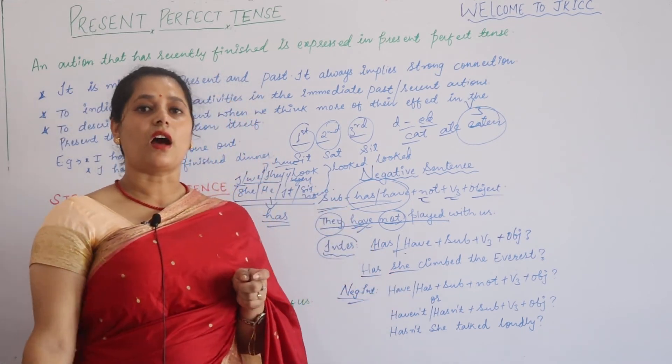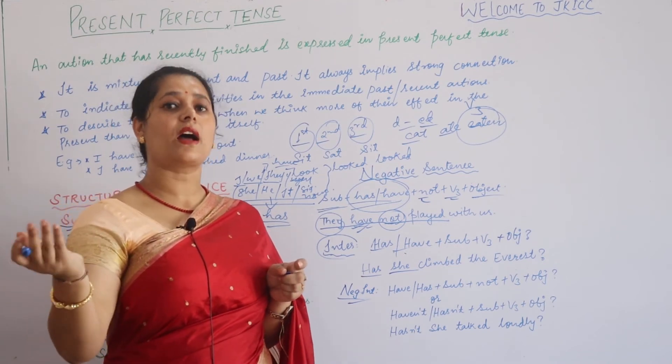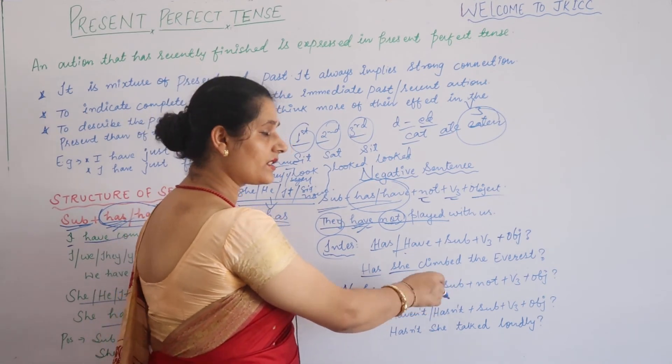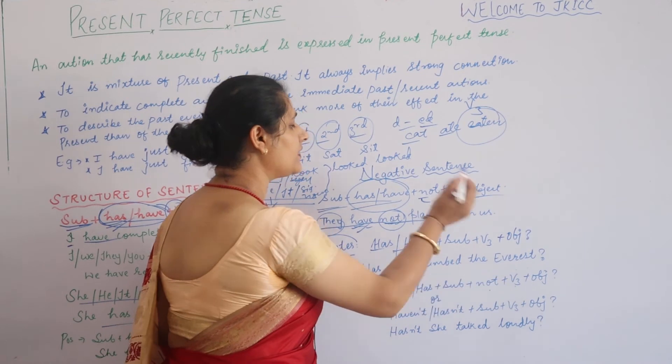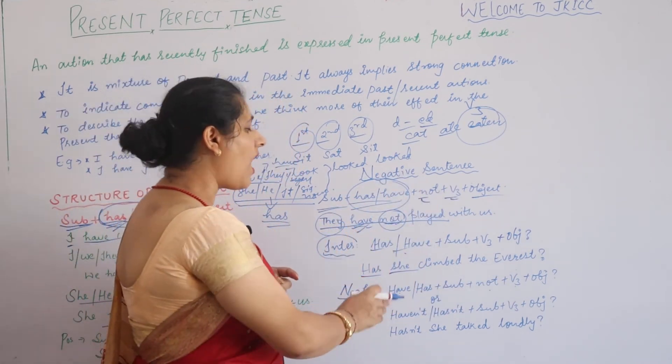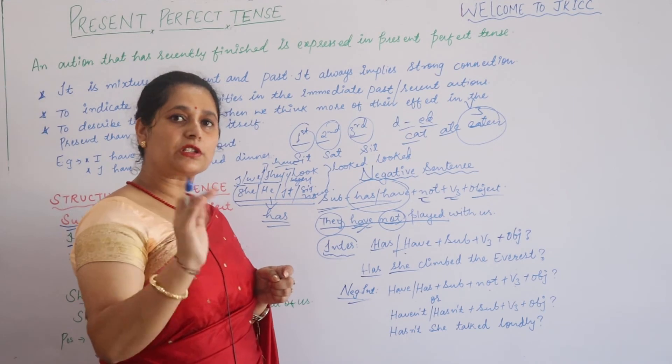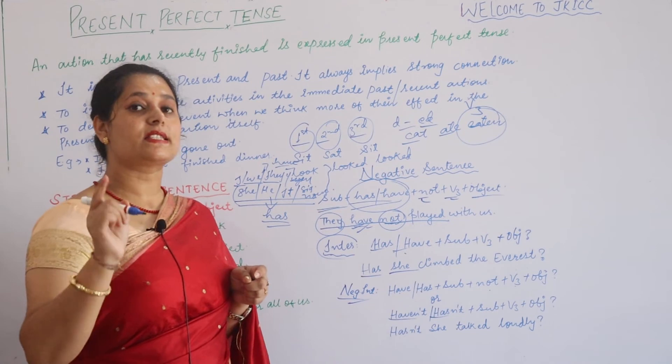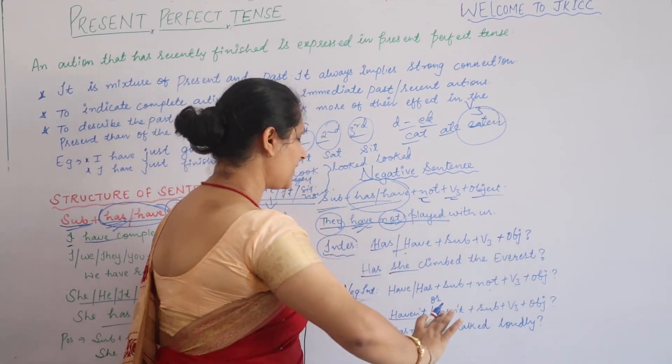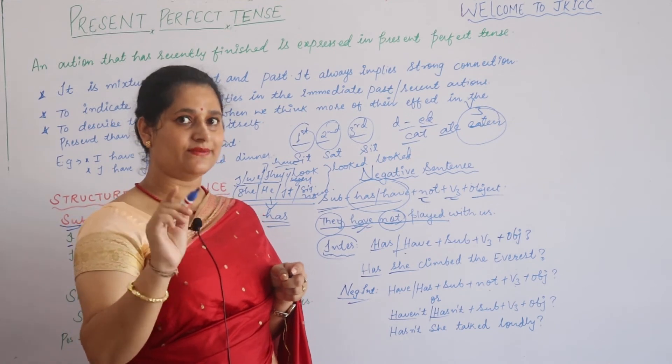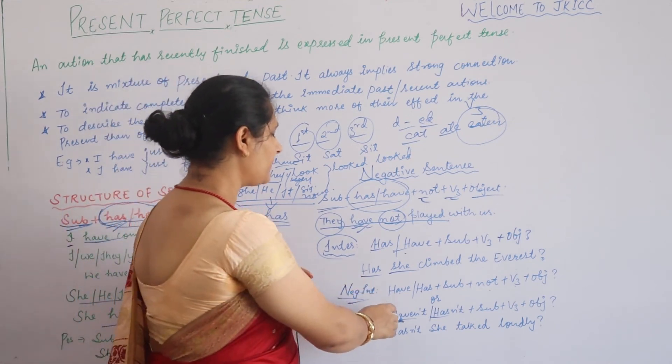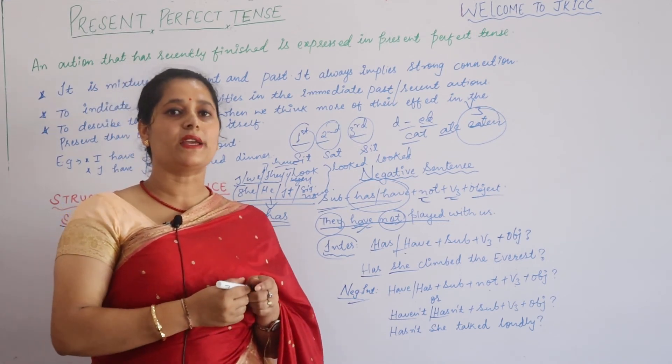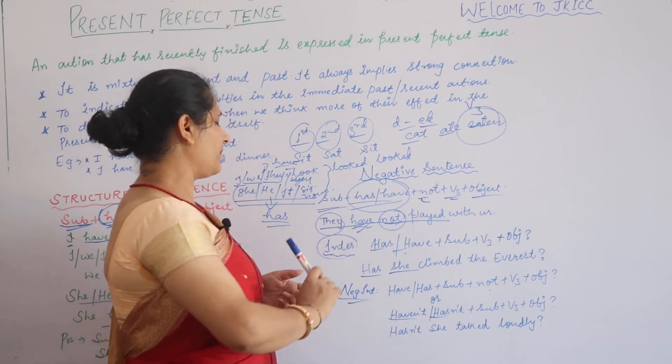For negative interrogation, if you want to say 'nahi ho chuka hai', how will we say it? Has/have, subject, subject ke baad hum lagayenge 'not', and then third form of verb, and then object. Otherwise, we can shorten it, abbreviate it: haven't, hasn't plus subject, and then third form of verb and object. Hasn't she talked loudly? Question mark. Haven't they played cricket? Question mark. This is how we make negative interrogation.